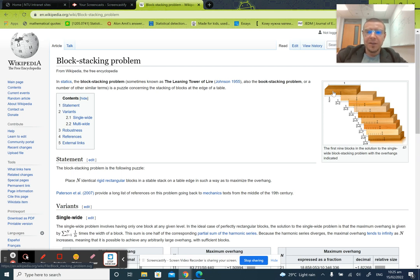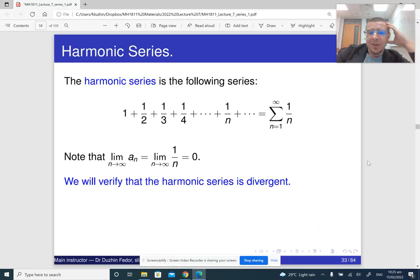The fact that the harmonic series diverges tells you that if you have an unlimited supply of blocks, then it means that the overhang can be made unlimited in this problem. So it's kind of cool. I thought I should share this with you. Now, how do we prove that the harmonic series is divergent? It's also a very neat idea.